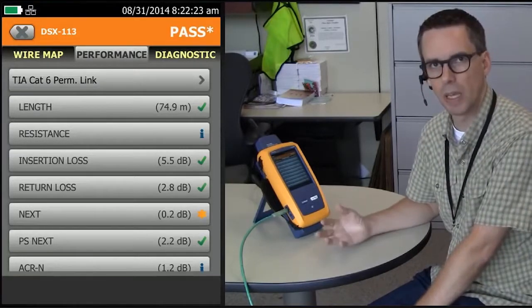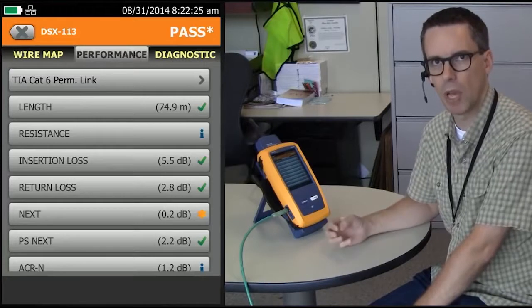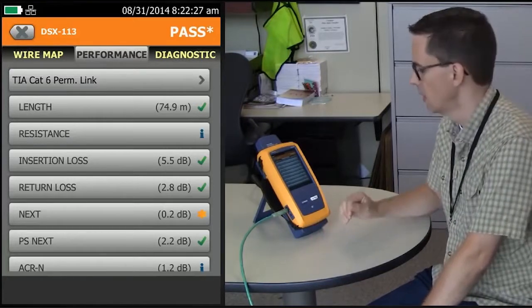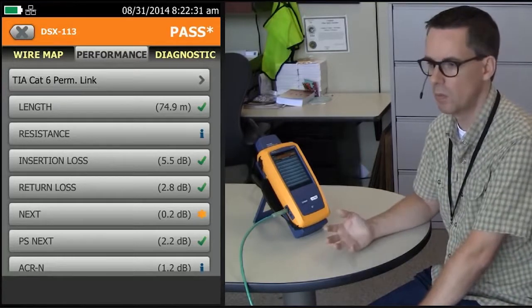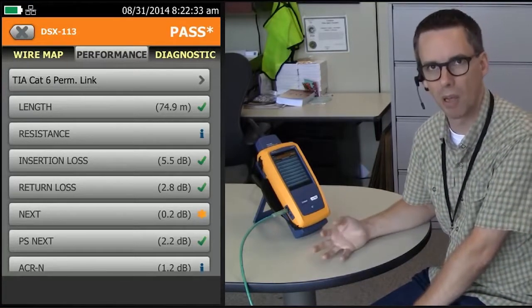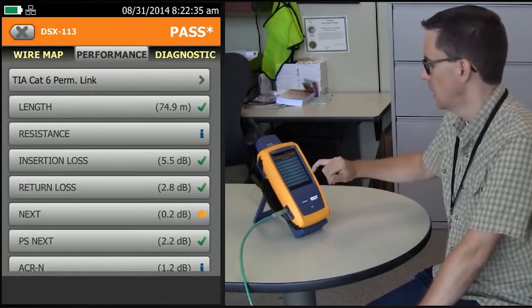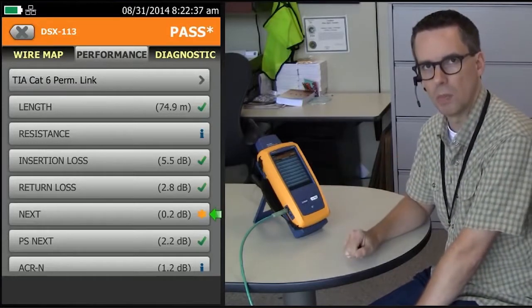And why? Because he's paying for a premium cabling system, and if you have a premium cabling system, you shouldn't see marginal passes. If you purchase one of these minimally compliant cabling systems, then you can expect to see these marginal passes.